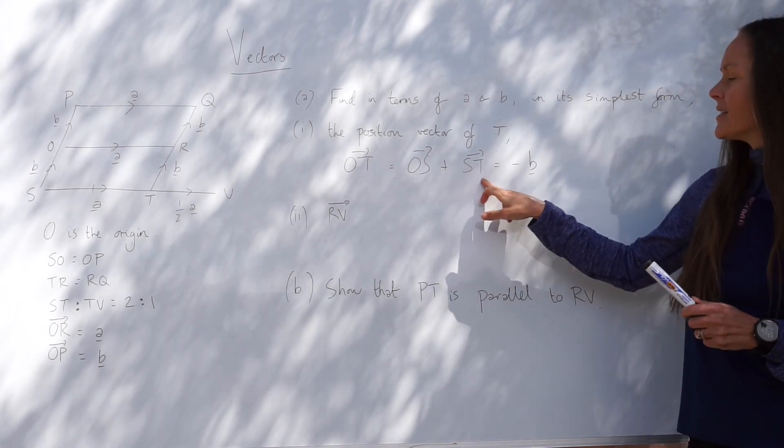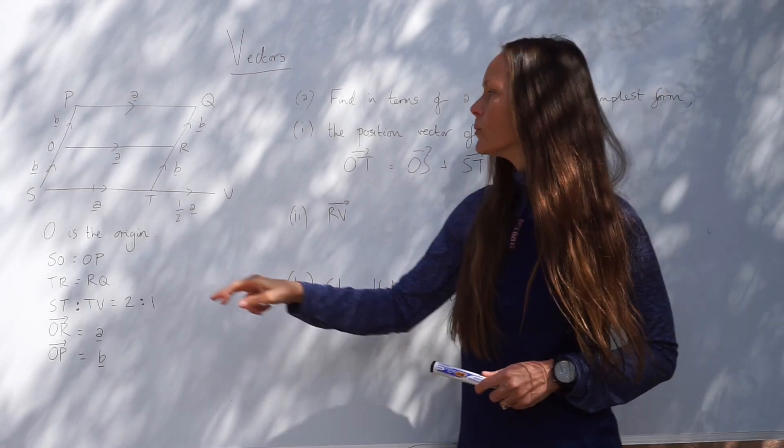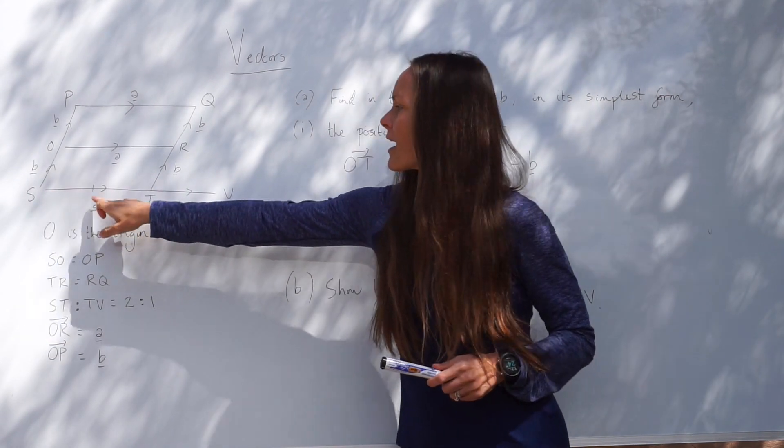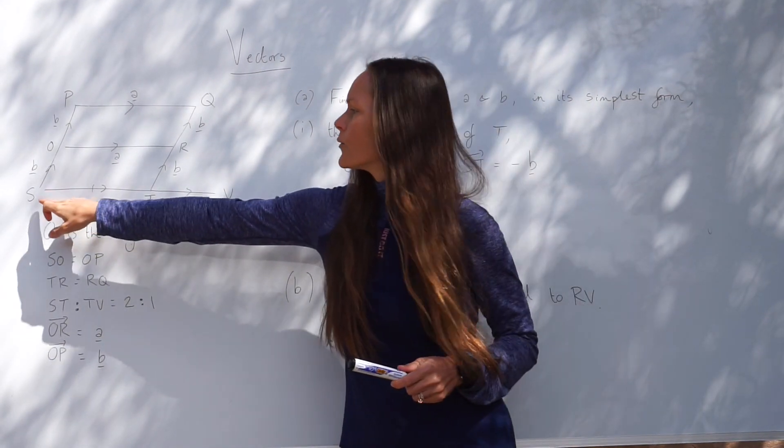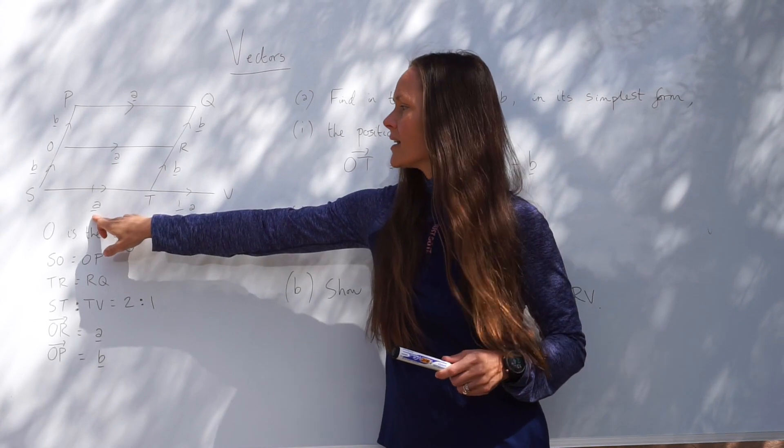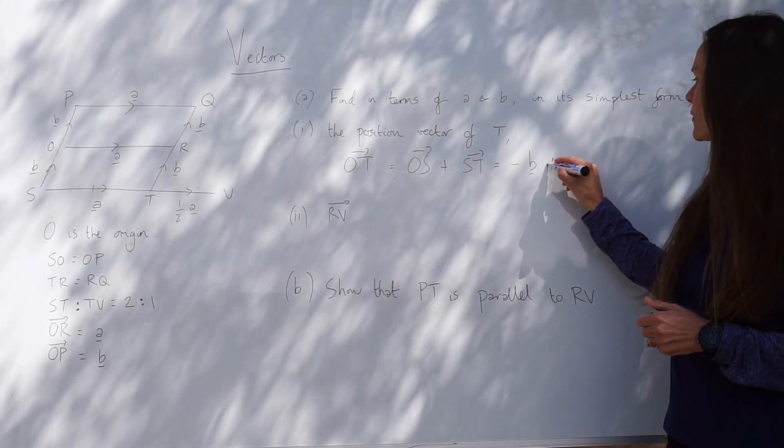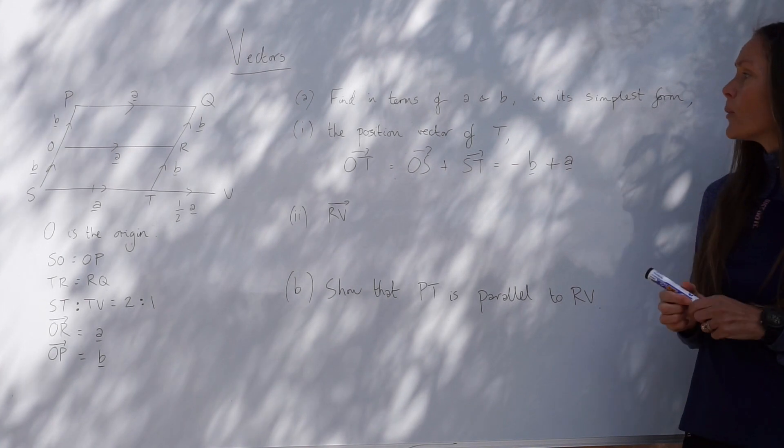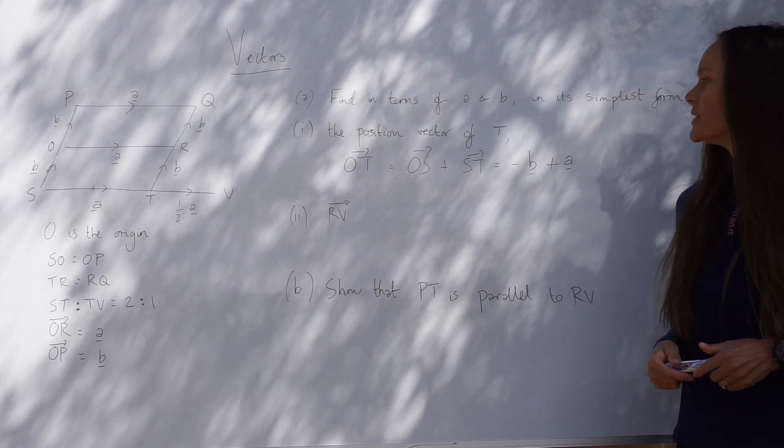Next, if we look at S to T, well, this one's really straightforward. We're travelling with the arrow, and we know from S to T it's just vector A. So it's just plus A. And that's the final answer. So we've worked out the position vector of T.